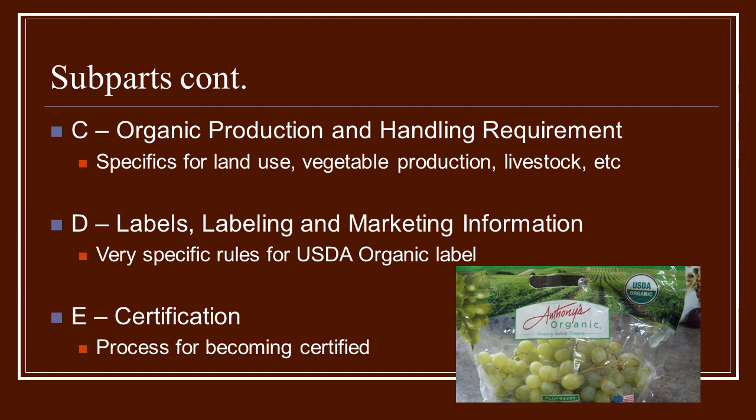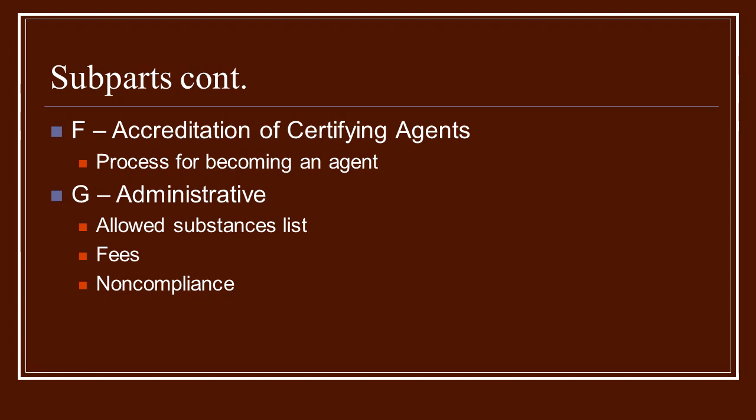Subpart E is regarding certification. It goes through the process for becoming certified. Subpart F has all the rules and regulations for certifying agencies — the process of how to become an agent, what they need to follow, and the rules and regulations they need to abide by in order to certify farms.